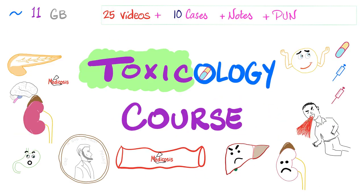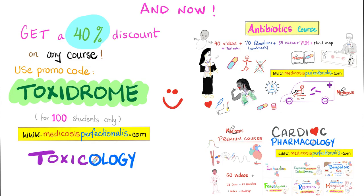The course comes with 25 videos, 10 cases, notes, and the Perfectionals ultimate notebook — we're talking about 11 gigabytes of content. I've added Google Drive links so that you can watch them on Google Drive and save them to your library.